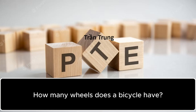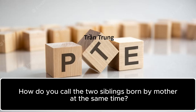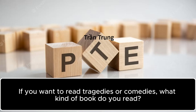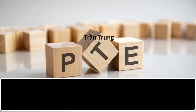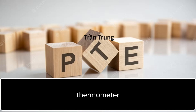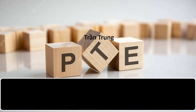How many wheels does a bicycle have? Two. How do you call the two siblings born by a mother at the same time? Twins. If you want to read tragedies or comedies, what kind of book do you read? Novels. What do you use to test the body temperature? Thermometer. How do we call animals and plants preserved in the rocks? Fossil.